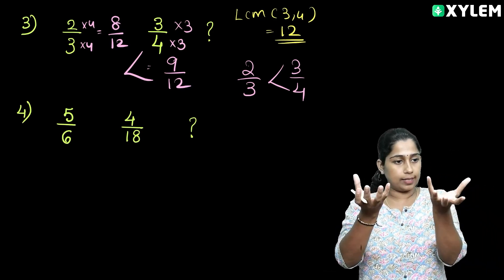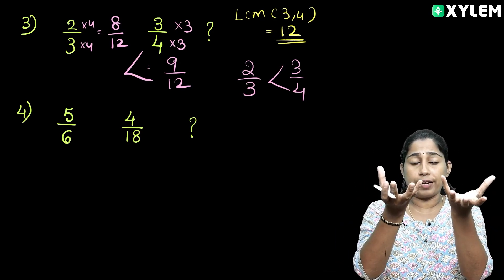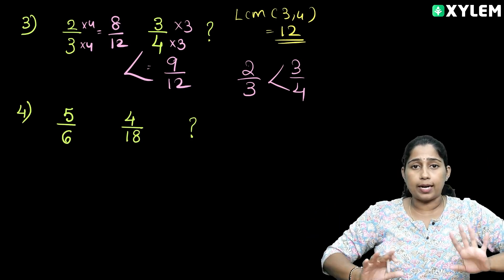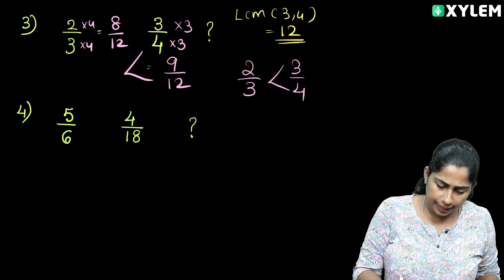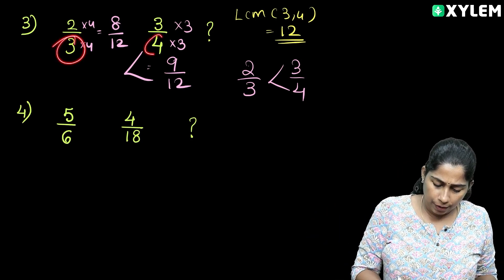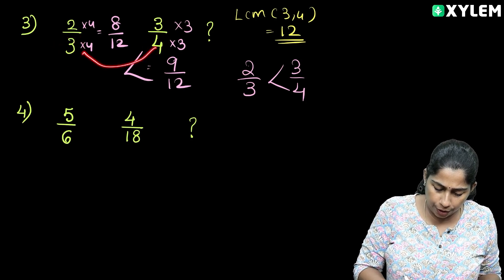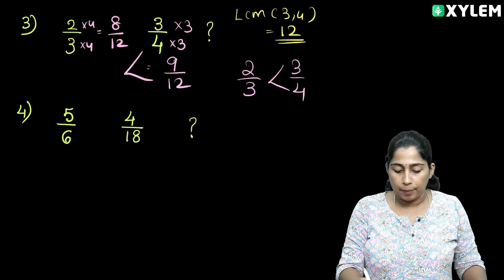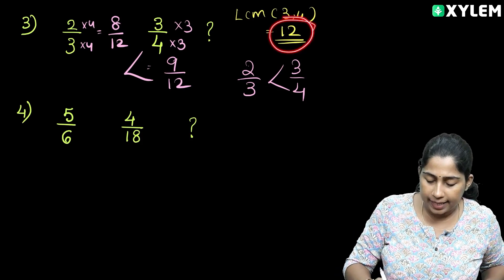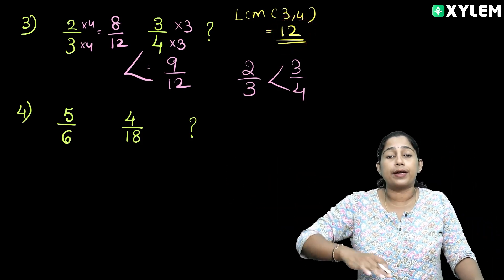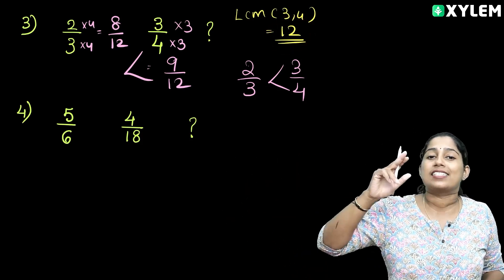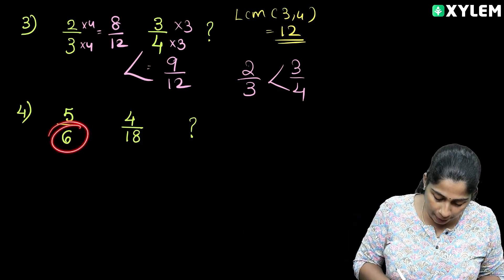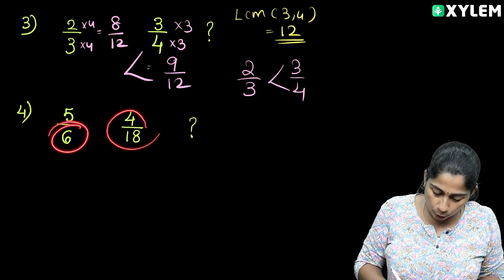3 is the denominator. You can see the denominator as well. If we have 3, then we have 4. Now we have 4 and 3. What we can do is find the LCM. We can do it in the denominator.